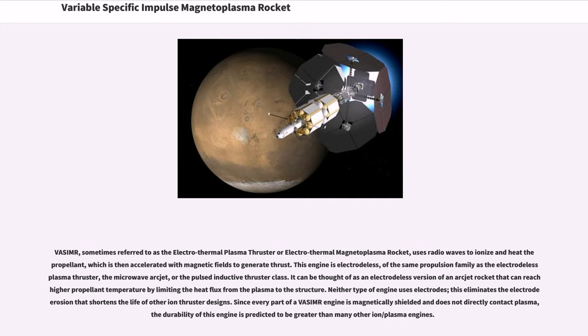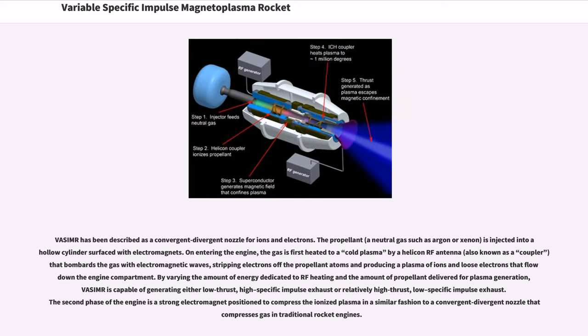This eliminates the electrode erosion that shortens the life of other ion thruster designs. Since every part of the VASIMR engine is magnetically shielded and does not directly contact plasma, the durability of this engine is predicted to be greater than many other ion-plasma engines. VASIMR has been described as a convergent-divergent nozzle for ions and electrons.